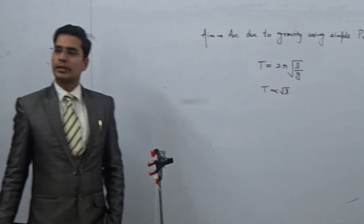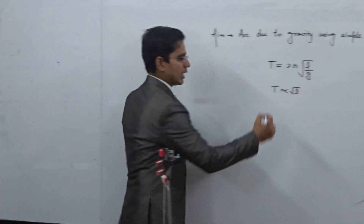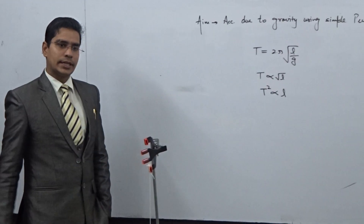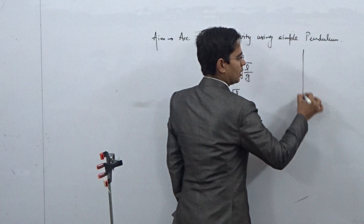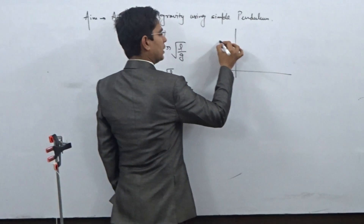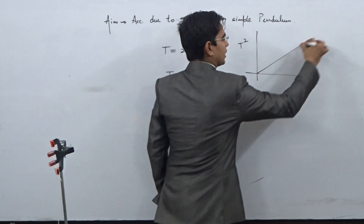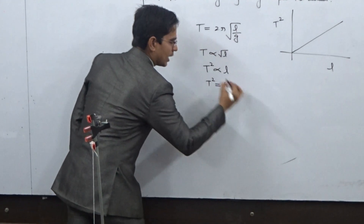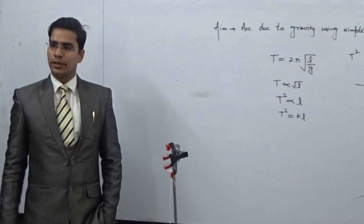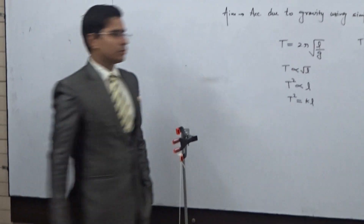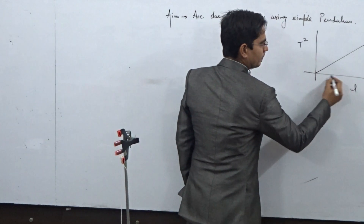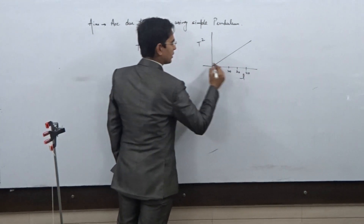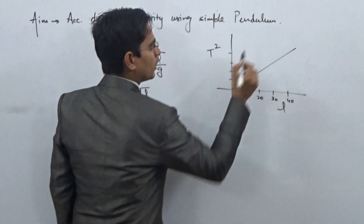If we square both sides, T² is directly proportional to L. This indicates that if you plot a graph between T² and L, it must come out as a straight line, because T² = kL. This is one of the observations to be recorded in your practical notebooks. You can take lengths like 10 cm, 20 cm, 30 cm, 40 cm and record the corresponding T² values.